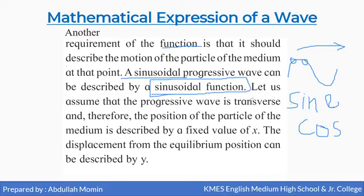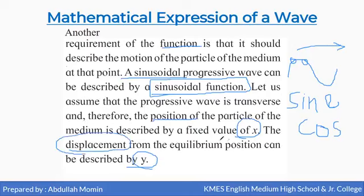Now let us assume that the progressive wave is transverse, meaning there is a crest and trough as the wave travels in a medium. The position of a particle of the medium is described by a fixed value of x, while the displacement from the equilibrium position is described by y.